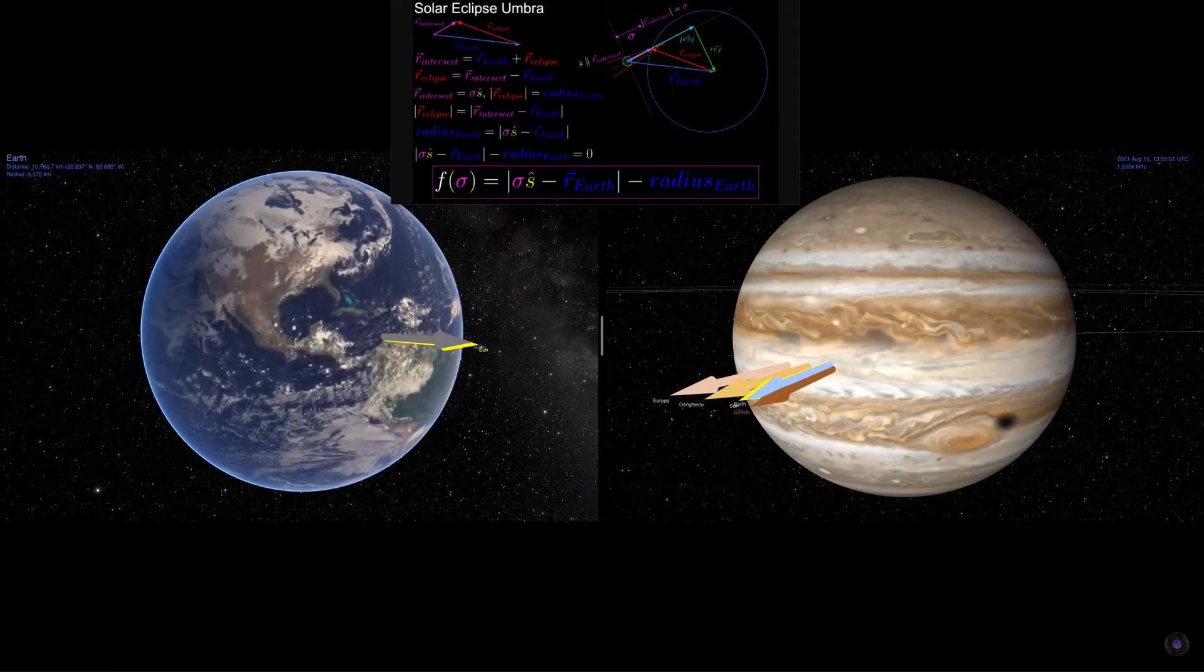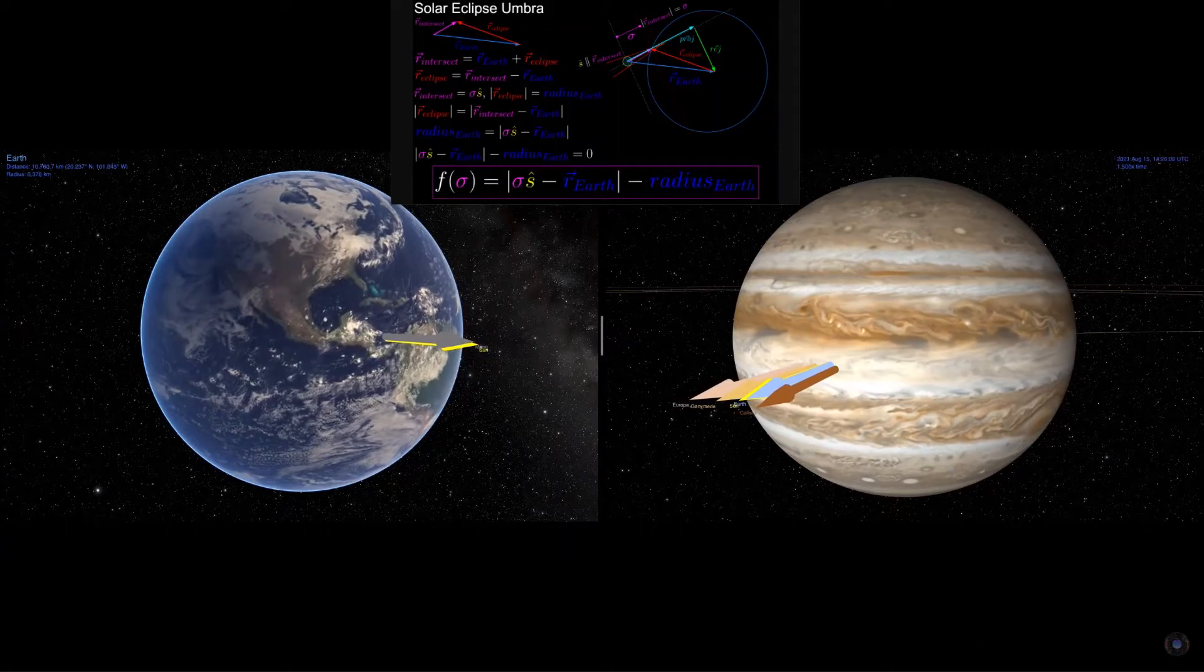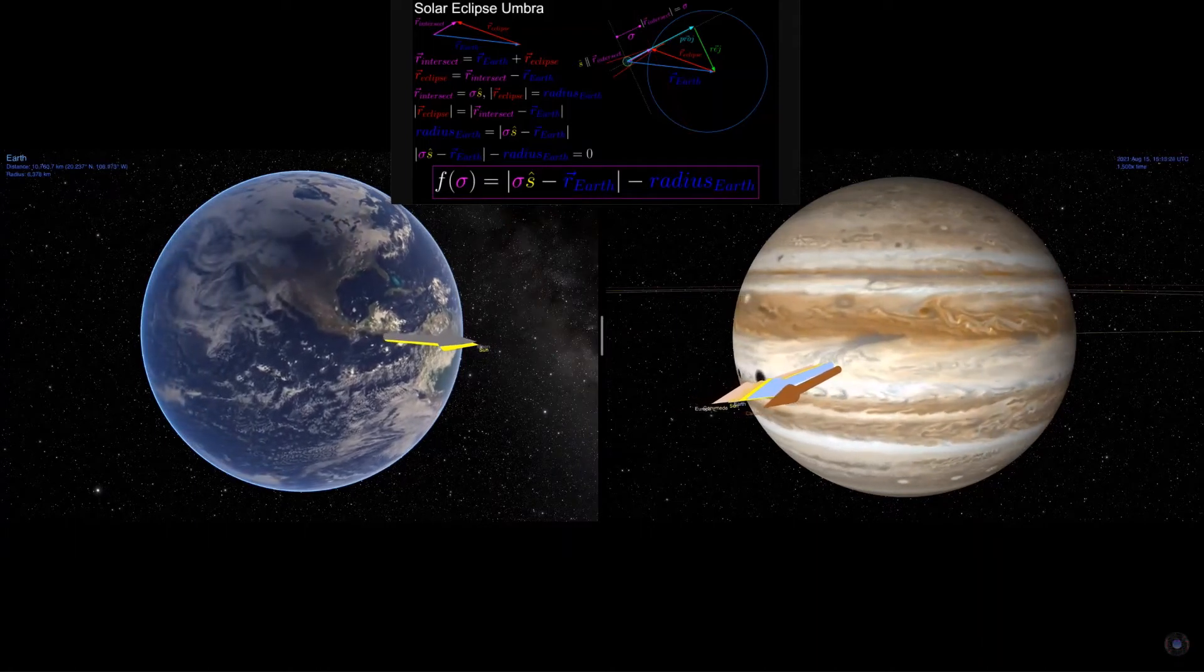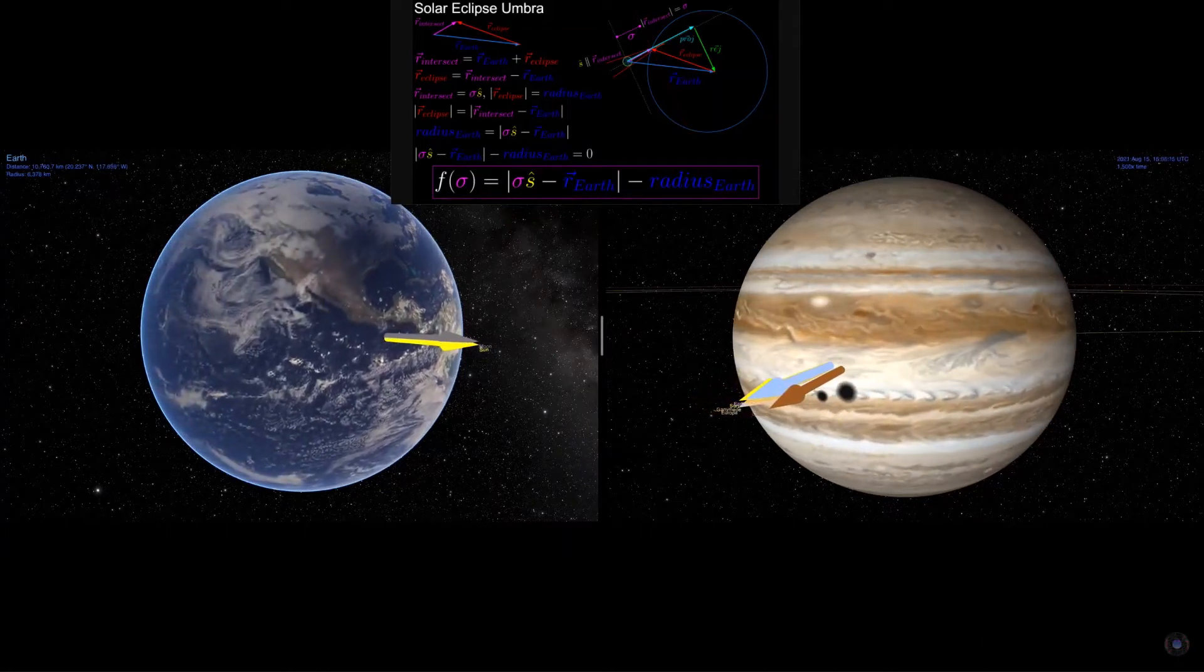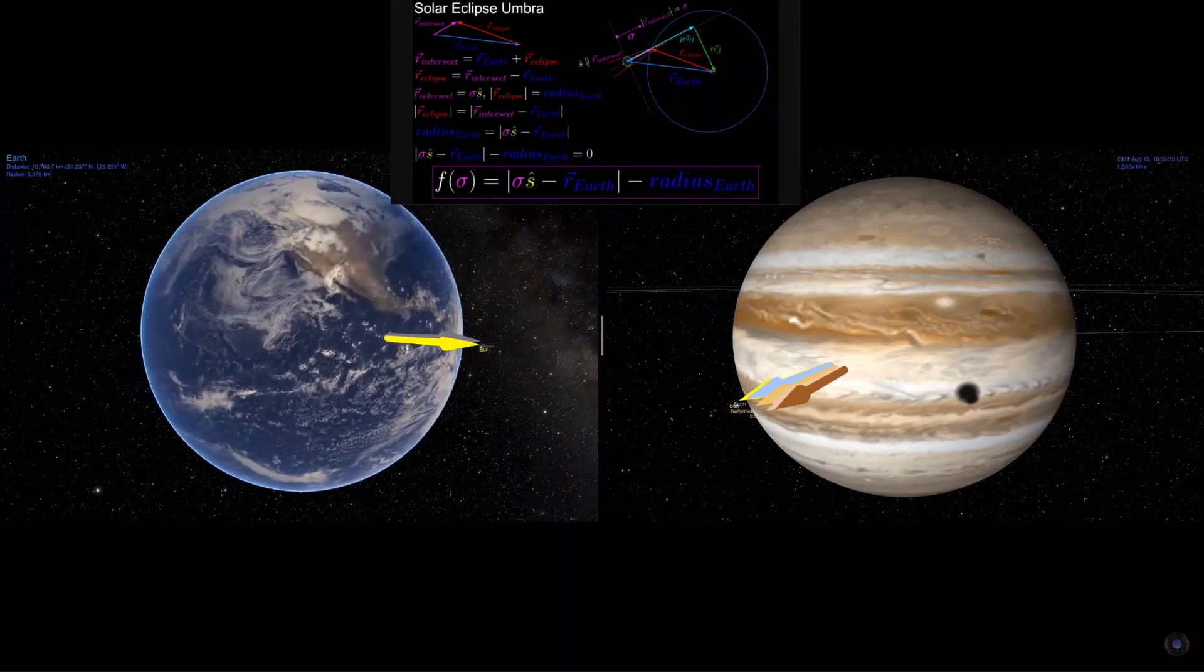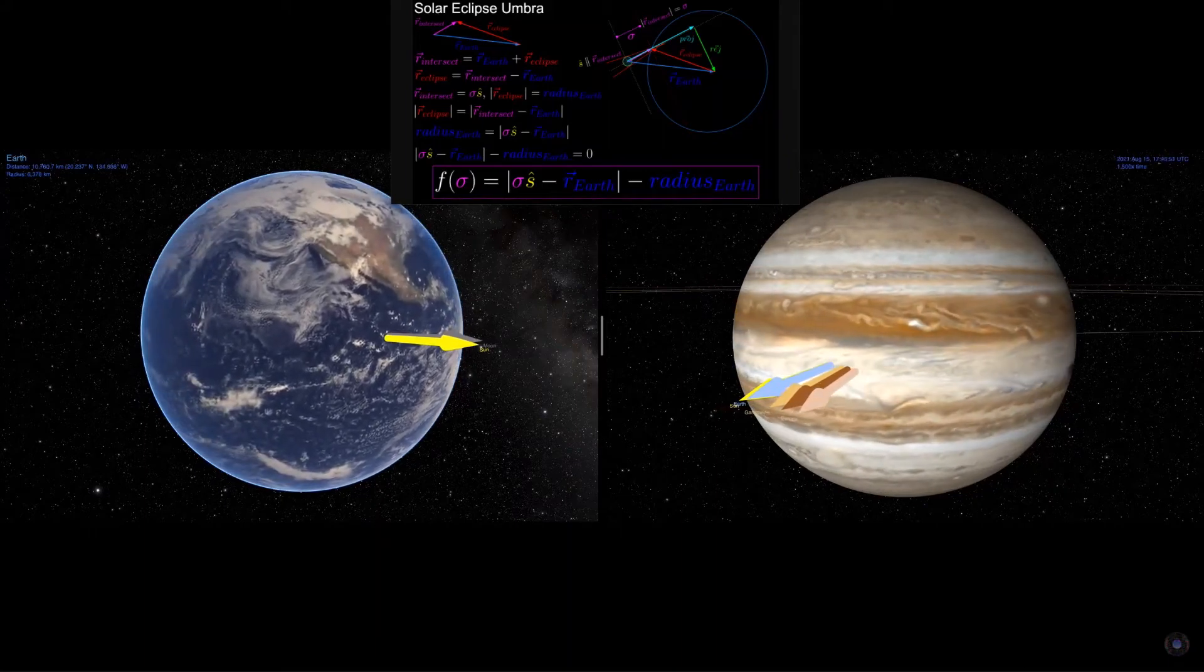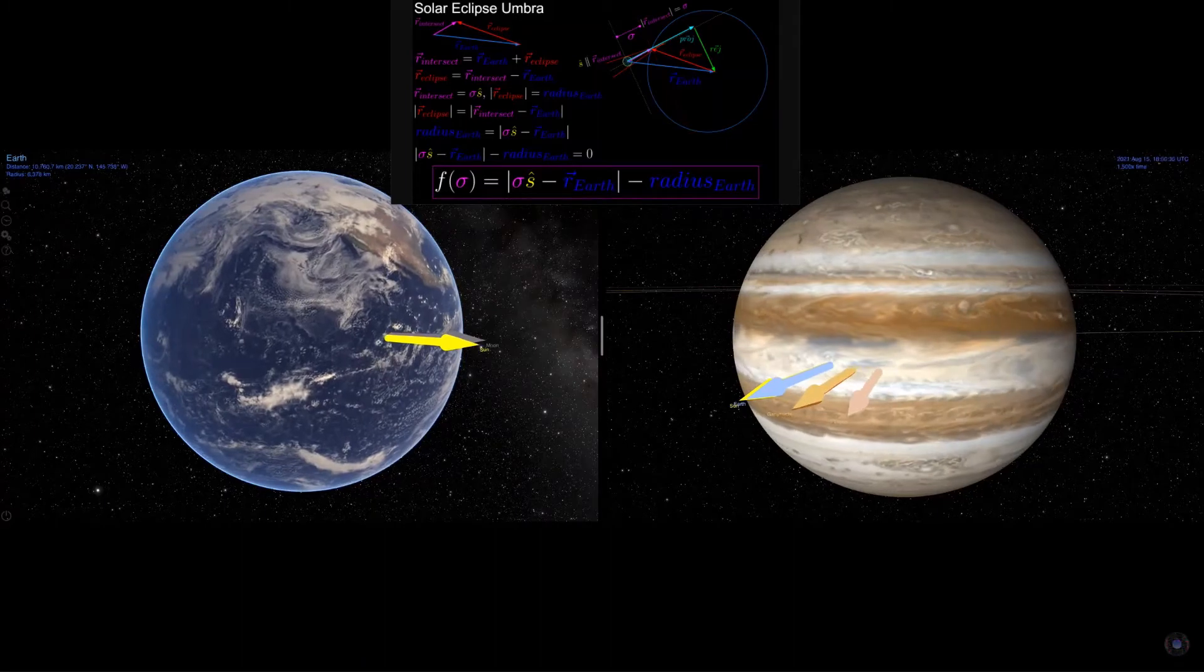In this video, we'll be going over how to calculate the latitude and longitude coordinates of solar eclipses using the examples of Earth with the 2017 Great American Eclipse and all total solar eclipses for the next five years, as well as Jupiter's 2021 triple eclipse with Europa, Ganymede, and Callisto.